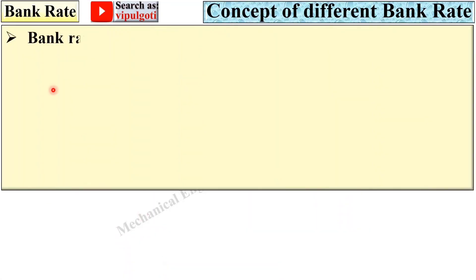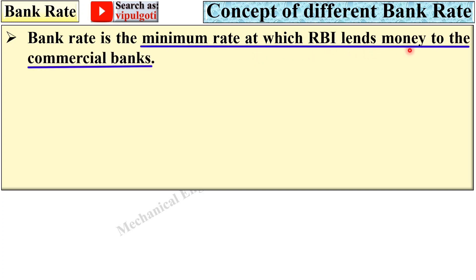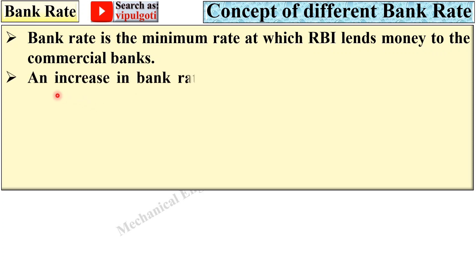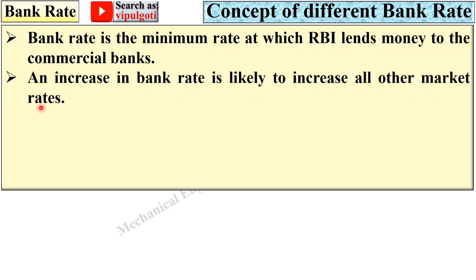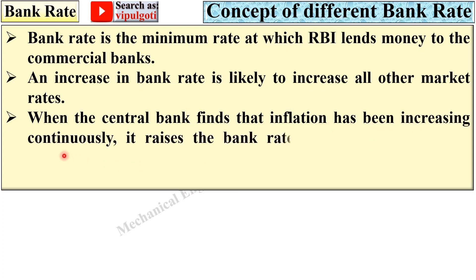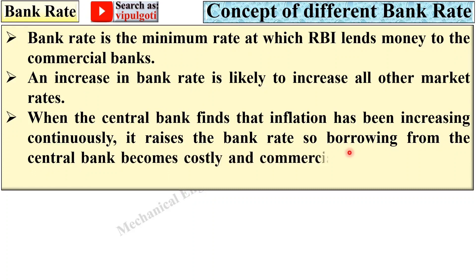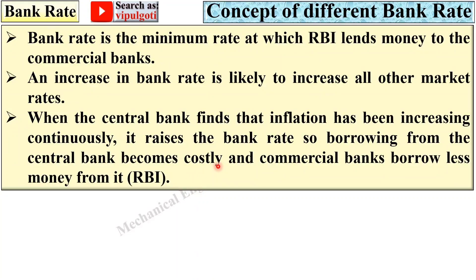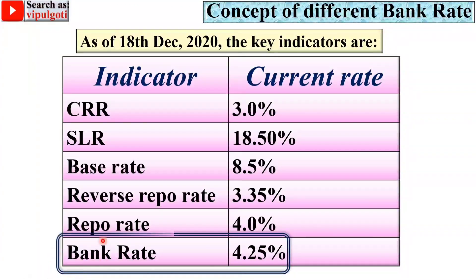Next is bank rate. Bank rate is the minimum rate at which RBI lends money to commercial banks. An increase in bank rate is likely to increase all other market rates. When the central bank finds that inflation has been increasing continuously, it raises the bank rate, so borrowing from the central bank becomes costly, and the liquidity of money in the market is controlled. The bank rate as of 18th December 2020 is 4.25%.